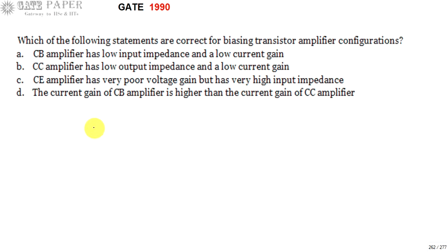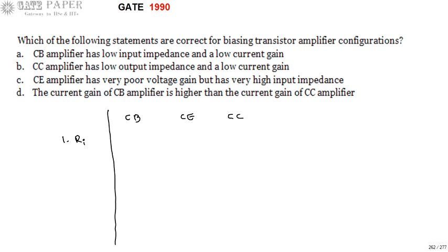To solve this, we must compare common base, common emitter, and common collector. The first comparison property is input impedance RI. The input impedance of common base is very small, RI of common emitter is a little bit larger compared to common base, and common collector has the highest input impedance.